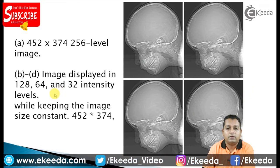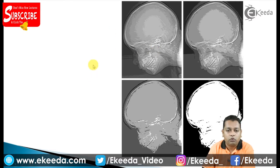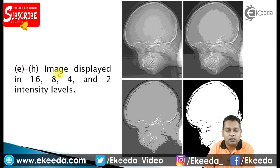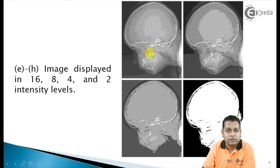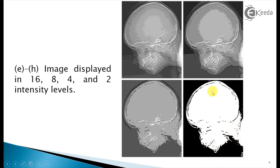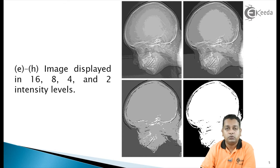Continuing with the same image dimensions, parts E to H are displayed with intensity values of 16 (2 to the power 4), 8 (2 to the power 3), 4 (2 to the power 2), and 2 (2 to the power 1) — only two intensity levels. With two levels, the image becomes black and white, represented digitally with intensity value 0 or 1. Reducing from 256 intensity levels to just two has degraded the image, demonstrating that both spatial resolution and intensity resolution should be at good levels for better digital image representation.